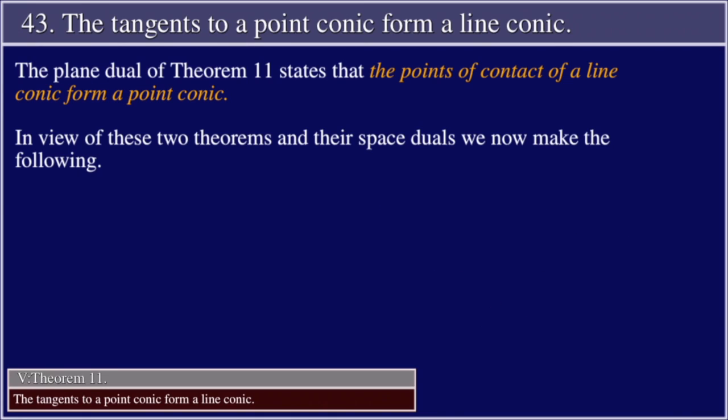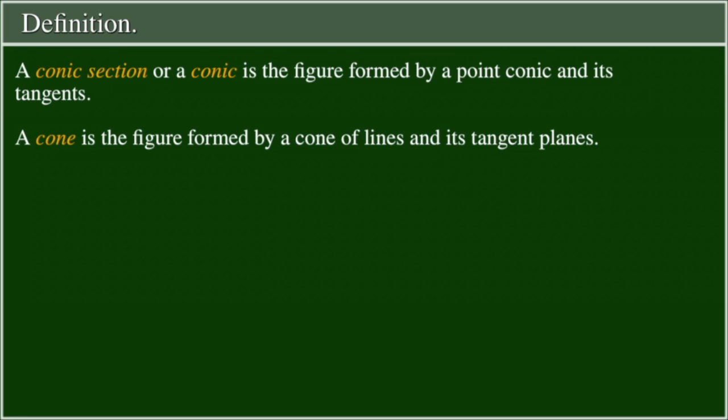The plane dual of Theorem 11 states that the points of contact of a line conic form a point conic. In view of these two theorems and their space duals, we now make the following definition: A conic section, or a conic, is the figure formed by a point conic and its tangents.